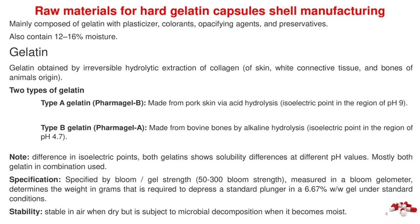Note: due to the difference in isoelectric points, both gelatins show solubility differences at different pH values. Mostly both gelatins are used in combination. Specification is given by bloom/gel strength, 50–300 bloom strength, measured in a bloom gelometer, which determines the weight in grams required to depress a standard plunger in a 6.67% w/w gel under standard conditions. Stability: stable in air when dry but subject to microbial decomposition when moist.